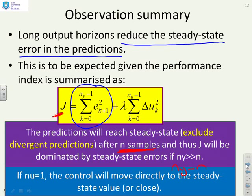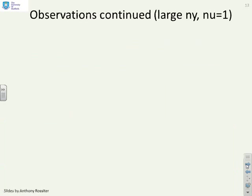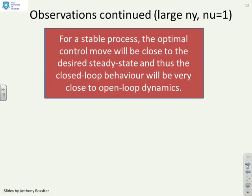If nu equals 1, then in essence what's going to happen for a large ny is the control will move directly to the steady state value or close to it. And that's what you will have noticed in all these examples, that the steady state error in the predictions was small and got smaller as you increased ny and therefore increased the dominance of the steady state error. And of course the downside is you therefore were totally ignoring the transients in the predictions.